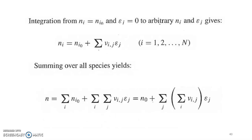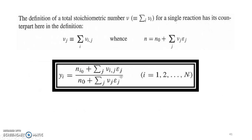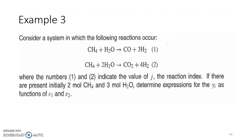We can integrate and eventually arrive at this mathematics. It is very easy to implement when we talk about a specific reaction. For example, if we have methane with steam giving carbon monoxide and hydrogen, and methane with 2 moles of steam giving carbon dioxide and 4 moles of hydrogen, and if the initial number of moles of CH4 and H2O is given, we can write the yi's. For methane, it is 2 minus epsilon 1 minus epsilon 2. For H2O, it is 3 minus epsilon 1 minus 2 epsilon 2. For CO, it is epsilon 1.